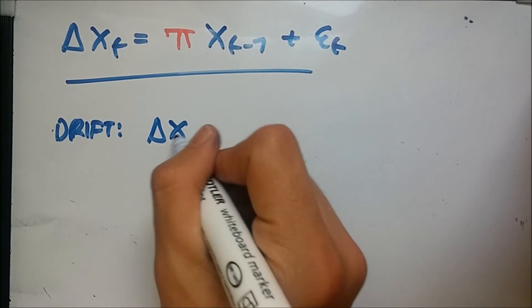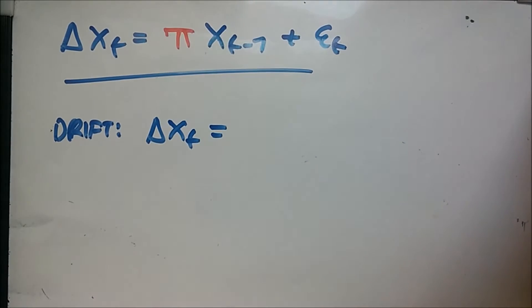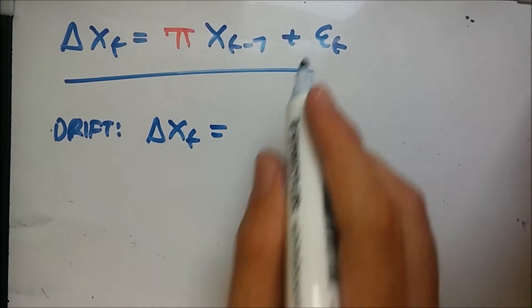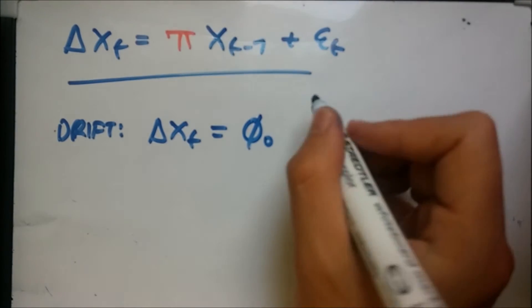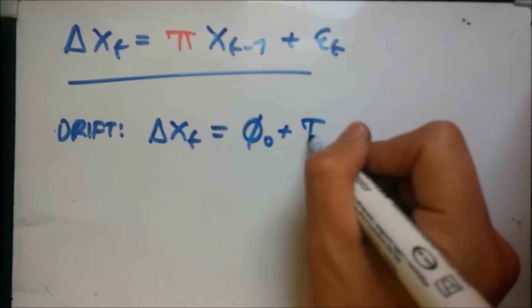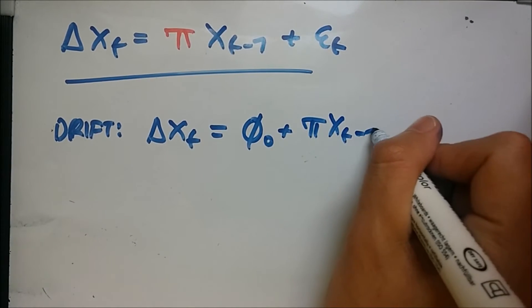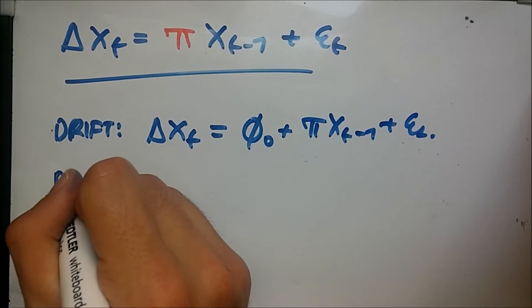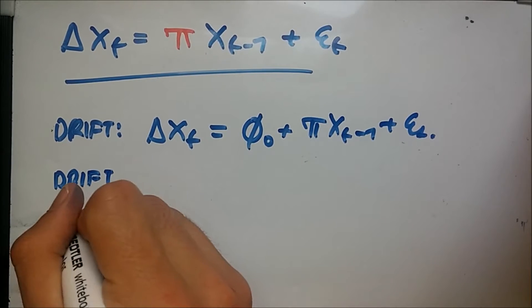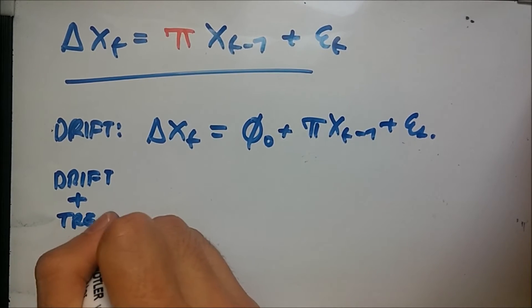We have the same equation here, delta X_t. This time instead of having this term alone we're gonna have something known as phi_0, which is the drift component, plus the rest of this: pi X_t minus 1 plus the error term.